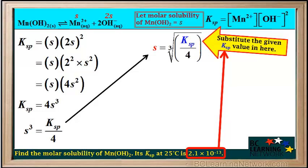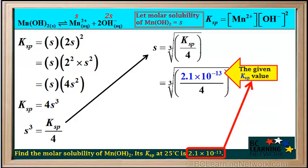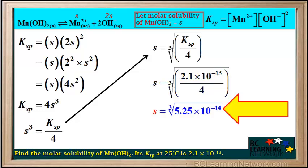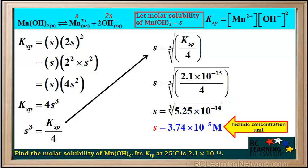In the next step, we substitute the given Ksp value of 2.1 × 10⁻¹³ in for Ksp. So S is the cube root of the whole fraction 2.1 × 10⁻¹³ over 4. We divide 2.1 × 10⁻¹³ by 4, which equals 5.25 × 10⁻¹⁴. So S is the cube root of 5.25 × 10⁻¹⁴, which gives us S equals 3.74 × 10⁻⁵.